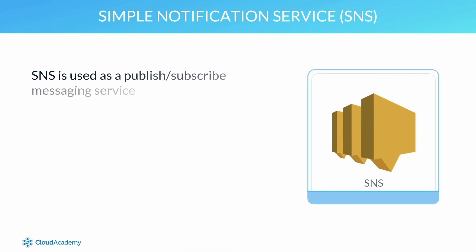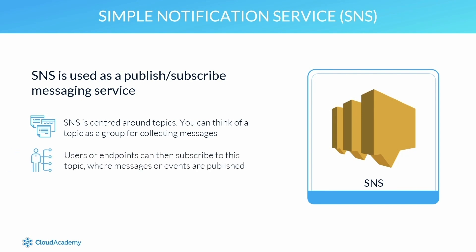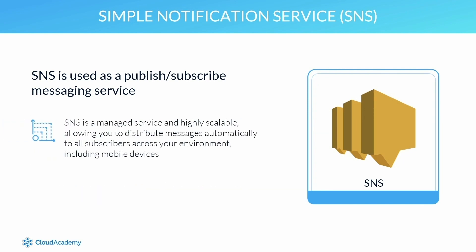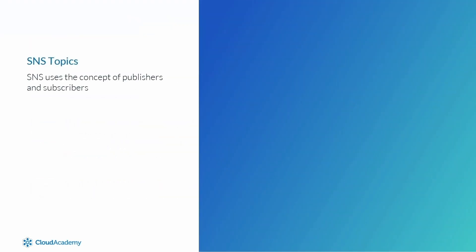The Simple Notification Service is used as a publish-and-subscribe messaging service. SNS is centred around topics — you can think of a topic as a group for collecting messages. Users or endpoints can subscribe to a topic, and messages or events are then published to that topic. When a message is published, all subscribers receive a notification. This helps to implement event-driven architectures within a decoupled environment. Much like SQS, SNS is a managed service and highly scalable, allowing you to distribute messages automatically to all subscribers across your environment, including mobile devices.